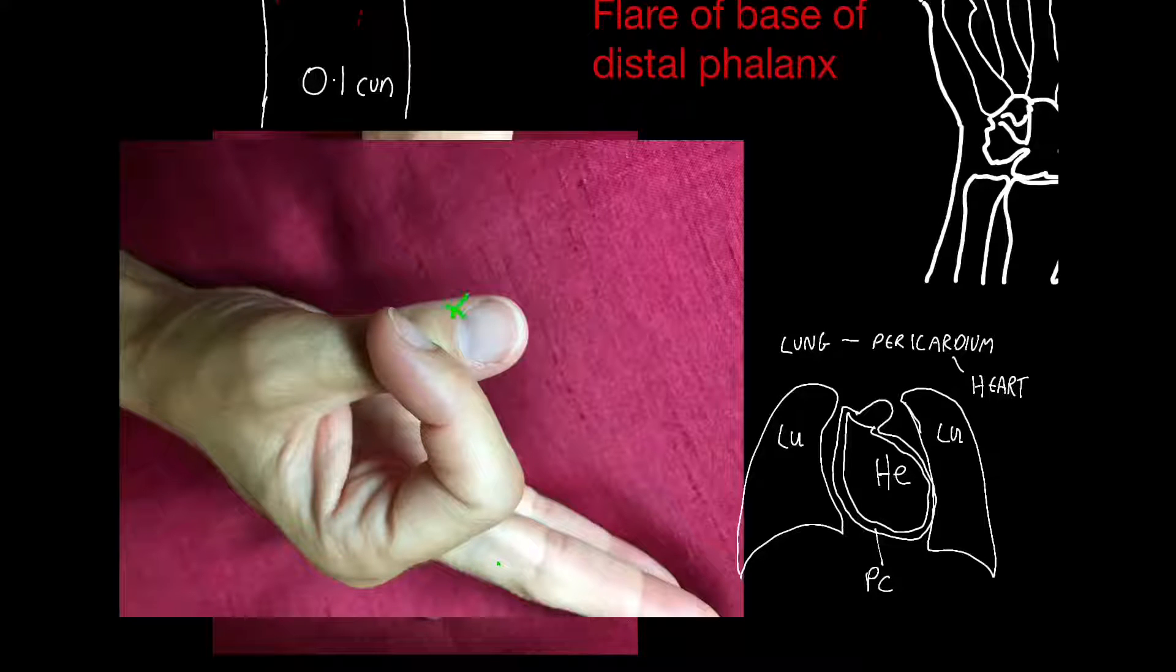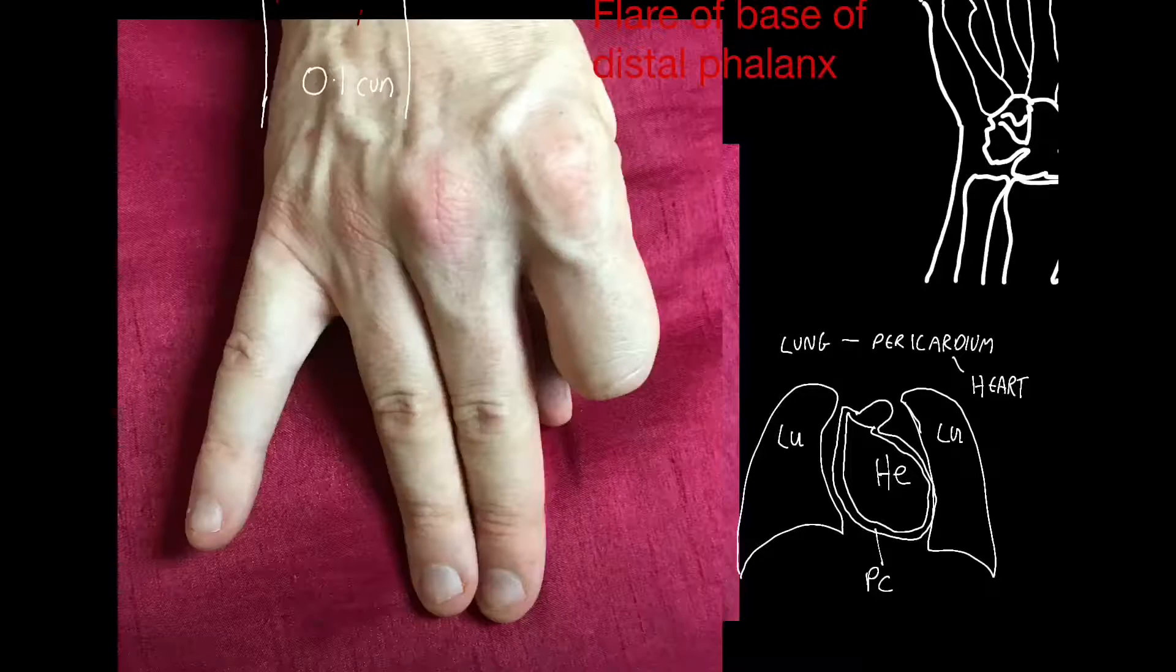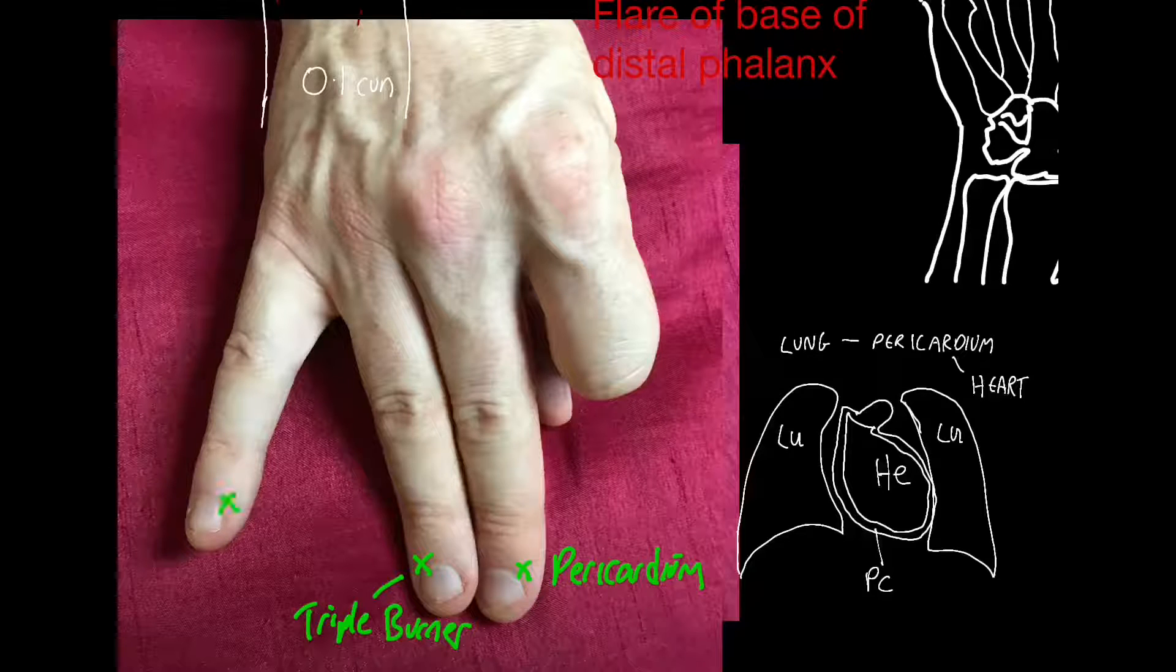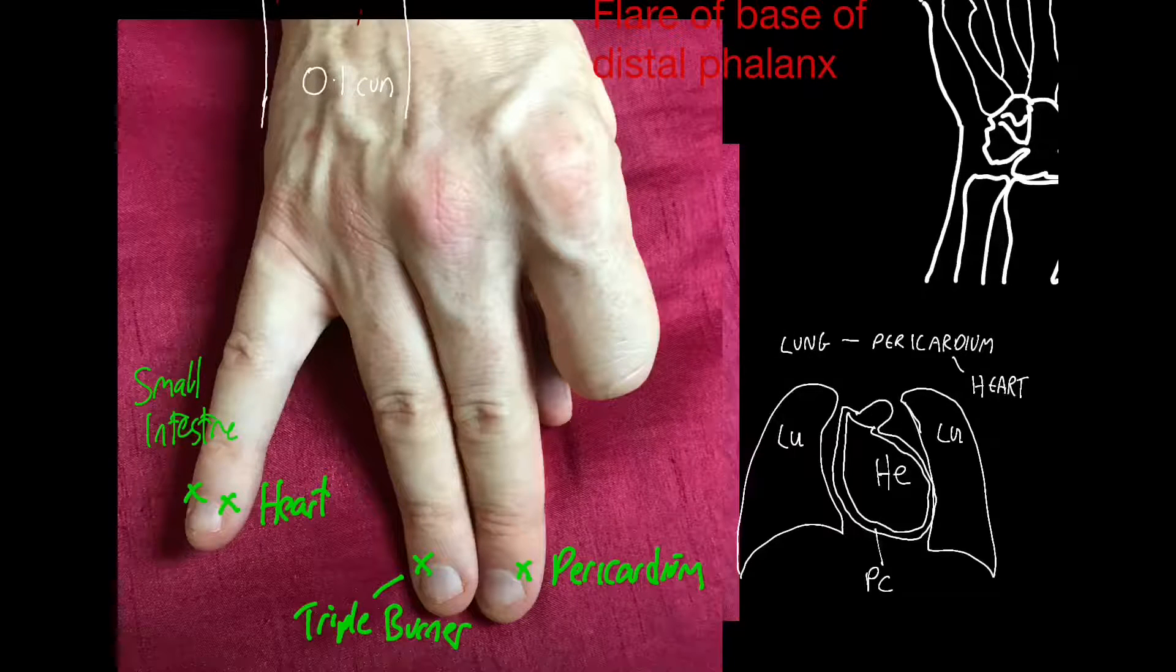So we have the lung and opposite the large intestine, the pericardium and the triple burner, and finally the heart and the small intestine.